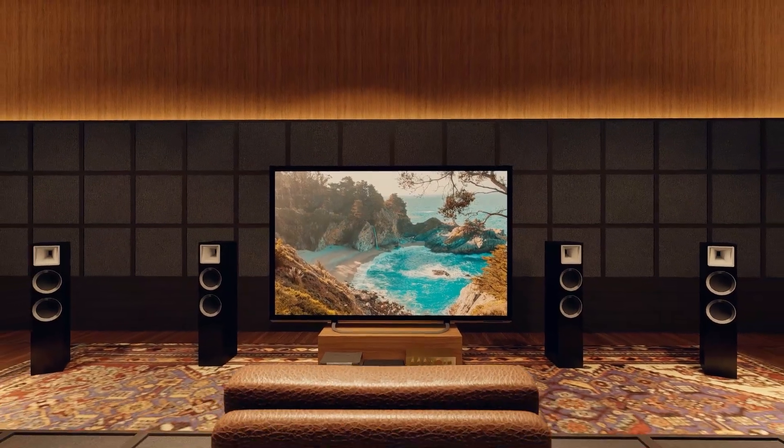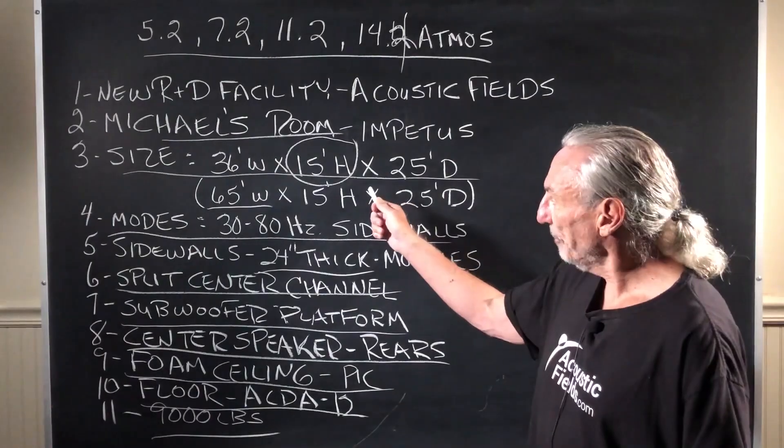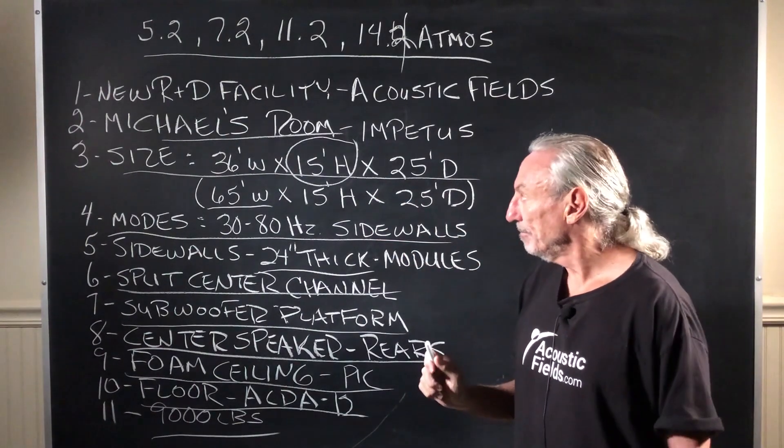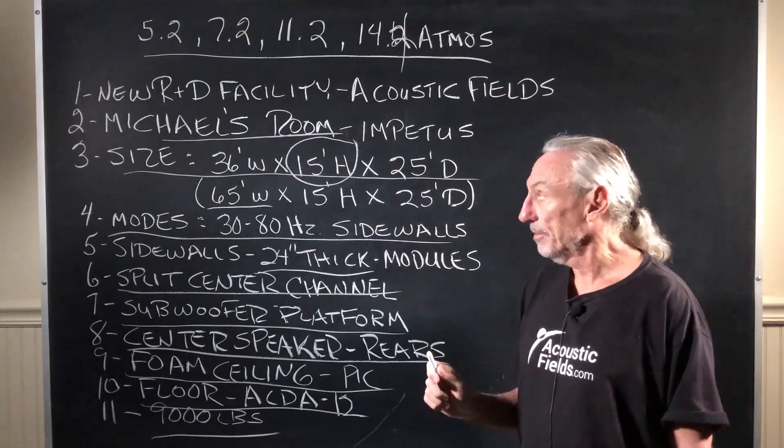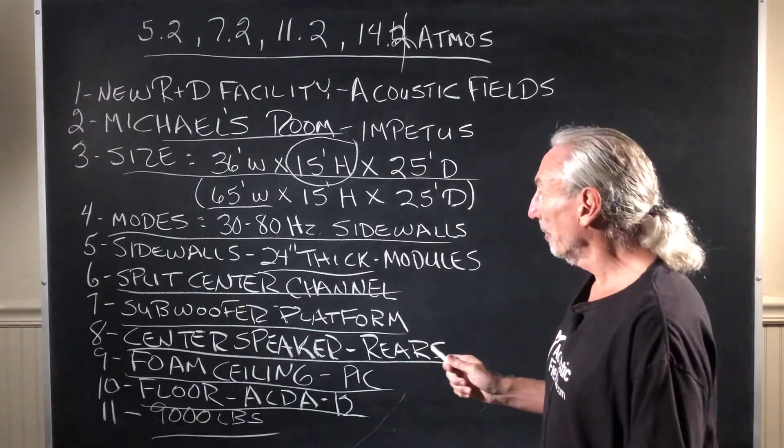What kind of room do we have? 36 wide, 15 high, 25 deep. Wonderful size. But here's the best part about the whole thing.